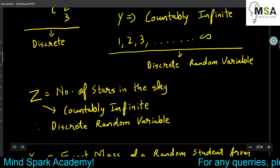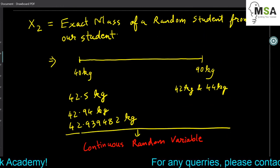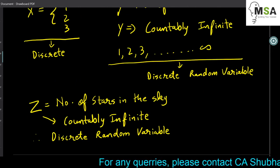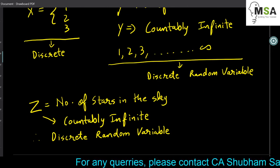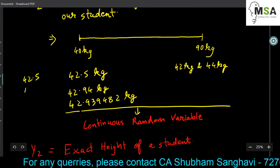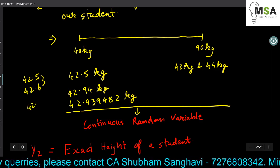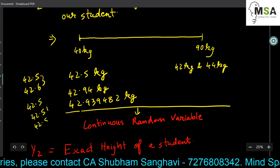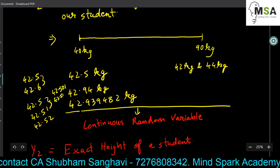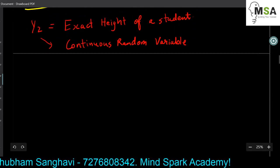Please understand the difference: for the exact mass of a student we cannot count it exactly, so it is a continuous random variable ranging between two intervals. Whereas for stars in the sky, we can count them but the counting goes on to infinity. For weight, even if we say 42.5 kg or 42.6 kg, there are still infinite numbers in between — 42.501, 42.502, and so on. These values cannot be counted exactly and are therefore continuous random variables.